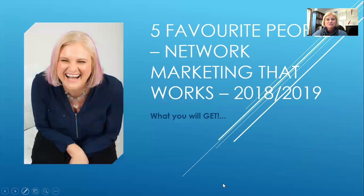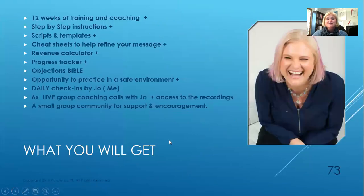Let me introduce you to my program, Five Favorite People Network Marketing Networks. What you're going to get in this program: 12 weeks of training and coaching, step-by-step instructions, scripts and templates, cheat sheets to help you refine your message, a revenue calculator, a progress tracker, and a new thing called an Objections Bible — a very powerful tool for handling objections.